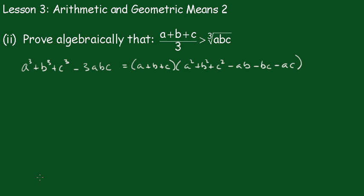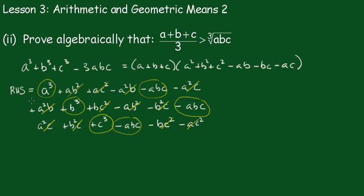It's a fairly long process, but what you find is that all the terms cancel out and you're finally left with a³ + b³ + c³ − 3abc, which equals the left-hand side. Therefore the result is true.